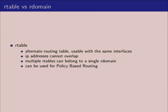In OpenBSD, with routing tables you're allowed to have multiple routing tables, and these utilize the same interfaces. So your firewall has four Intel Gigabit cards — EM0, 1, 2, 3 — and you're able to send traffic over all of them as necessary. The IP addresses in the routing tables cannot overlap; they have to be globally unique. You can have a different path to get to the end destination, however.